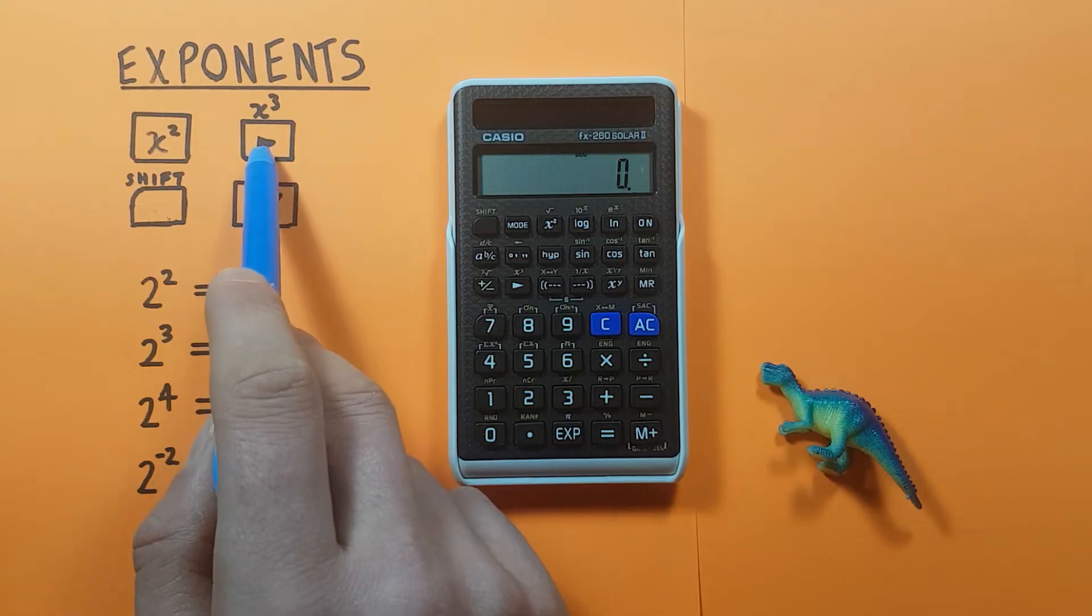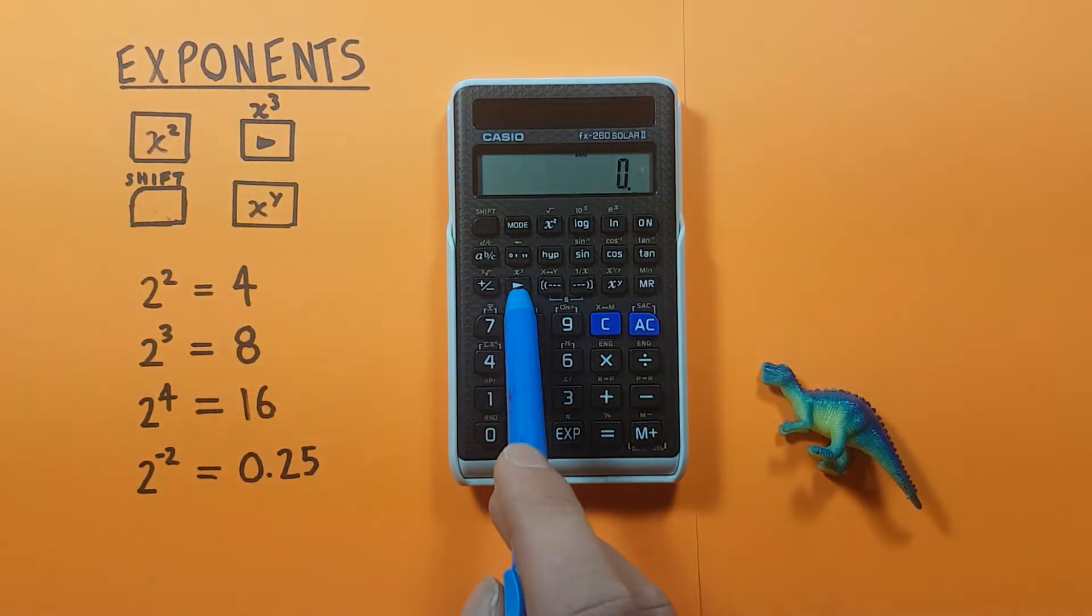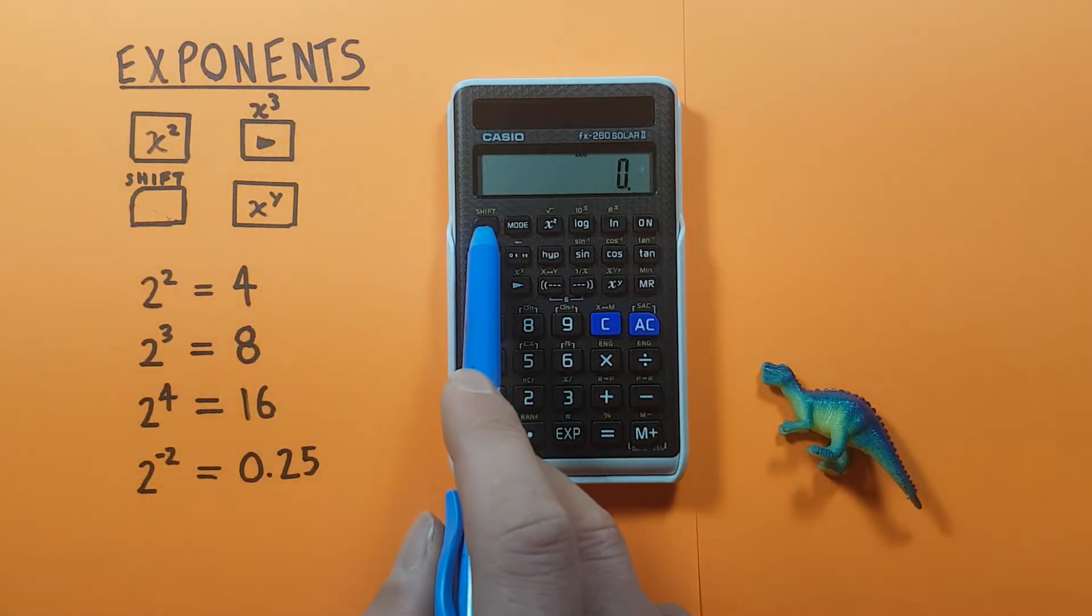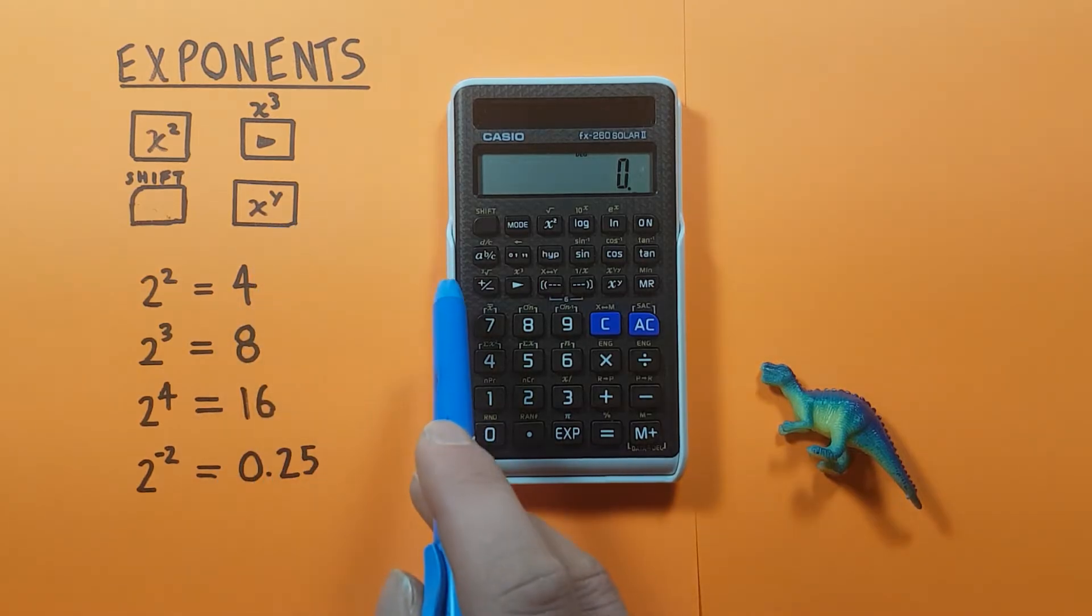The backspace key with the shift function of x cubed, which looks like this and is located here, the shift key located here, and the x to the y key, which is located here.